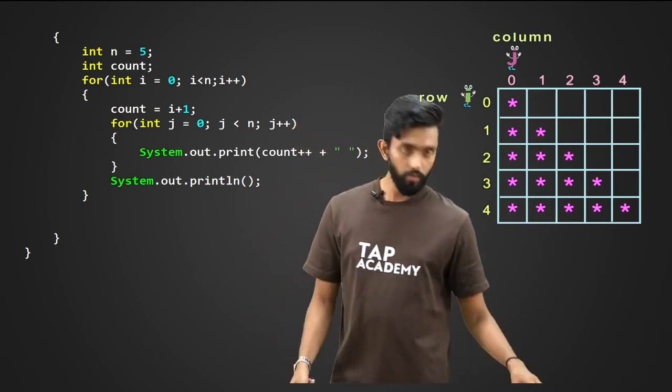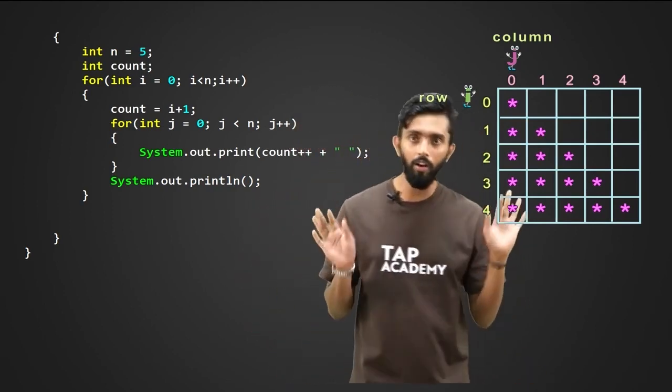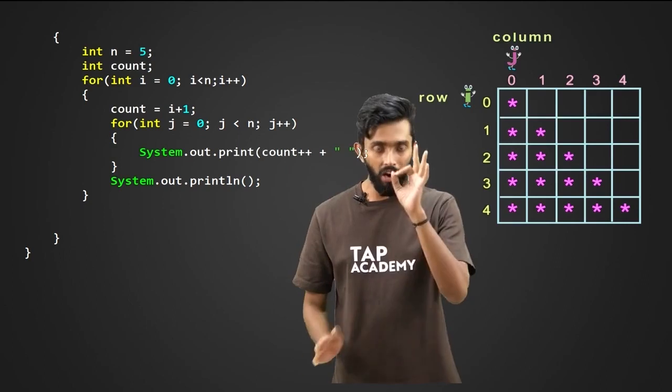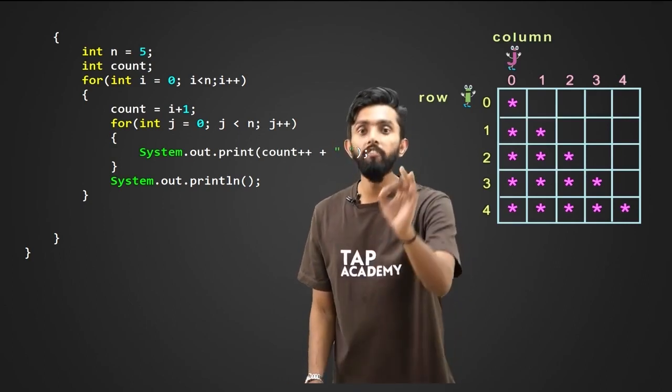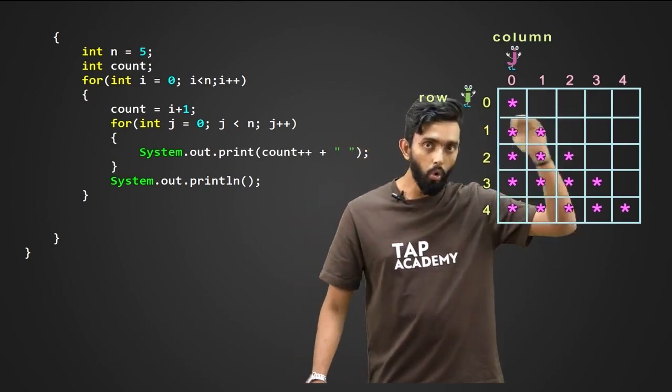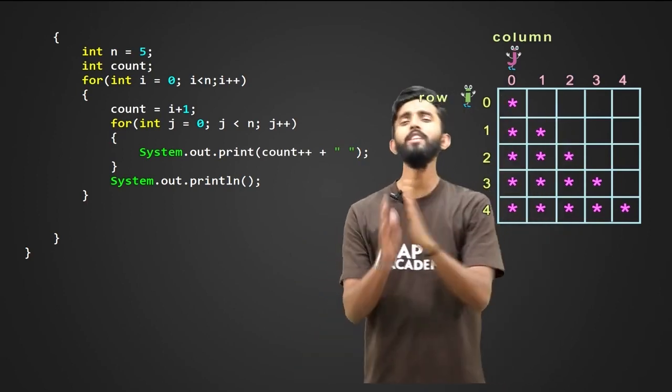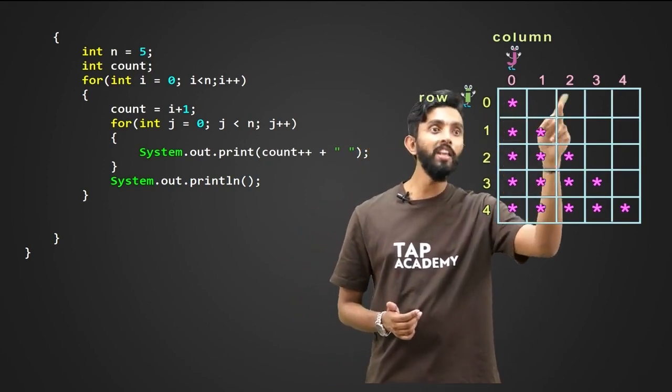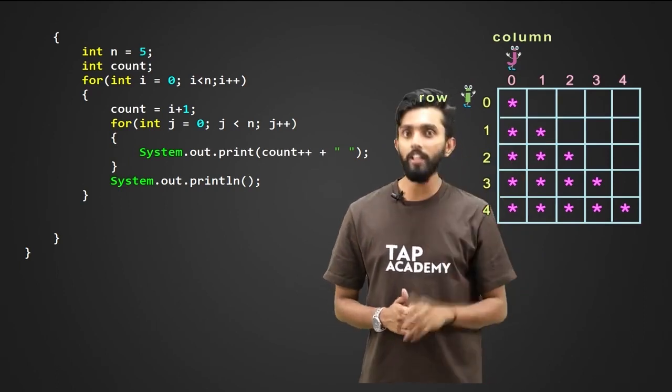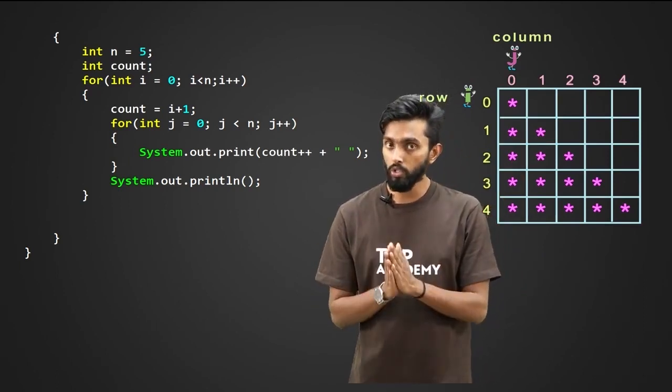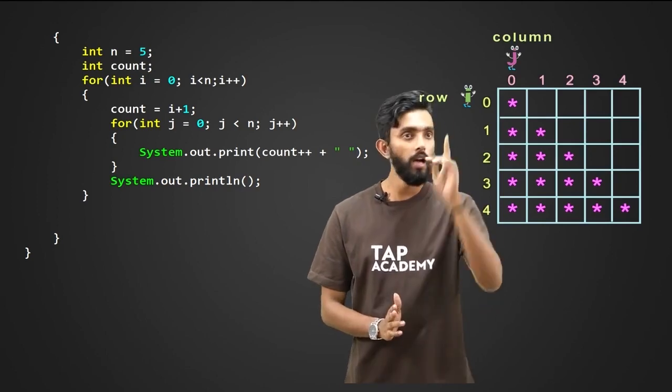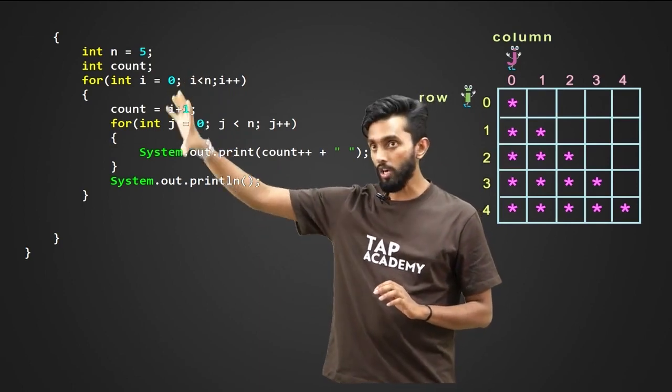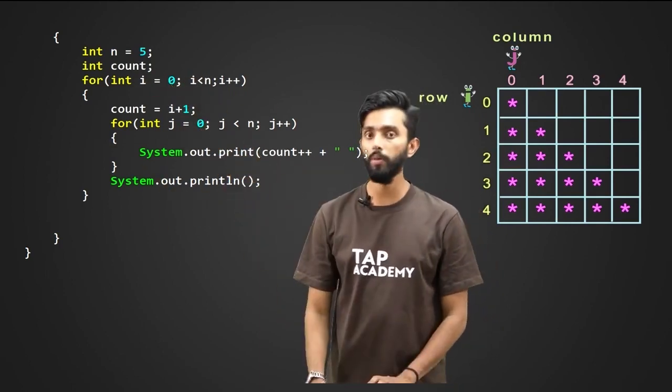First of all, whether it is rectangle or whether it is triangle, whether it is diamond, whether it is rhombus, one thing which will be fixed in every pattern is there will be rows, there will be columns. That is fixed. Now, in which row, how many columns get printed? What gets printed may change. But rows and columns are fixed. I and J is fixed. Which means even now, structurally, it is one loop inside another.